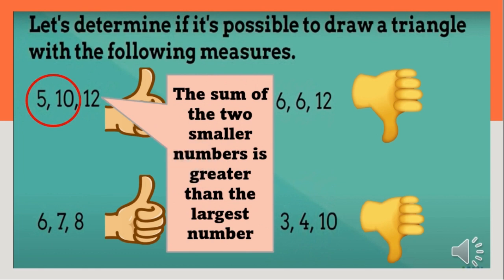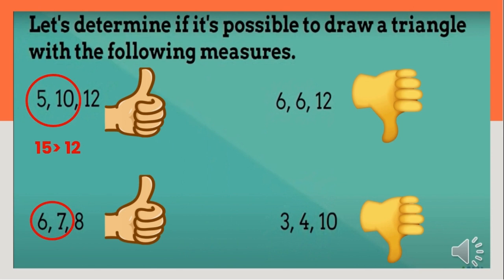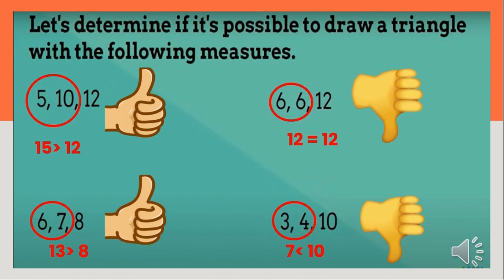Take note that the sum of the two smaller numbers must be greater than the largest number. In the first given, the smallest numbers are 5 and 10. 5 plus 10 is 15, and 15 is greater than 12. In the second given, the smallest numbers are 6 and 7. 6 plus 7 is 13, and 13 is greater than 8. Next, we have 6 and 6. 6 plus 6 is 12, and 12 equals 12 — therefore it cannot form a triangle. Lastly, 3 and 4: 7 is less than 10, so it is not possible to draw a triangle.